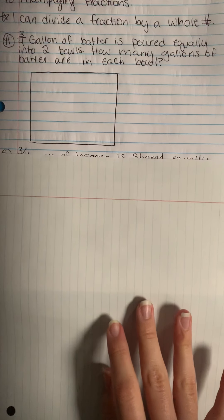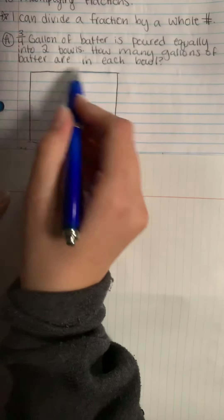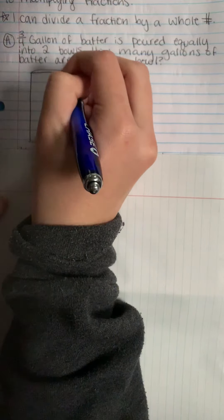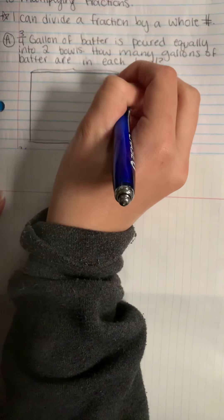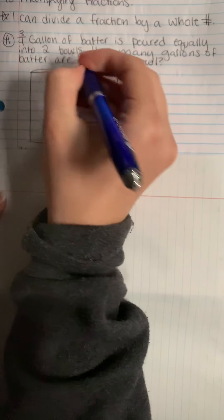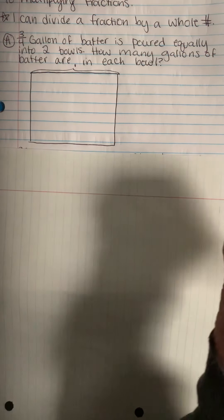To solve this, we will use an area model. Since the whole area model is across the top like that, I can show one whole. Since the whole is being cut into two equal parts or bowls, this is the partitive model of division.